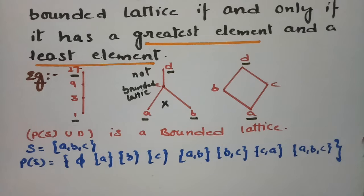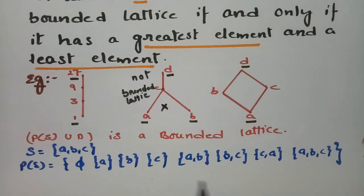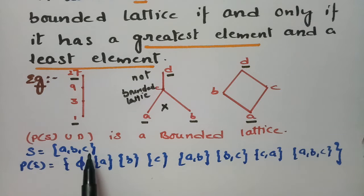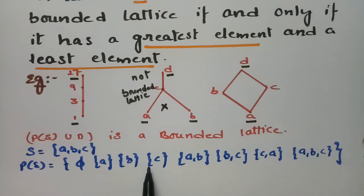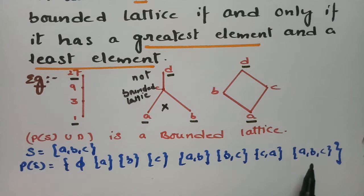The power set P(S) is a bounded lattice. Consider S = {A, B, C}. The power set consists of: the empty set, {A}, {B}, {C}, {A,B}, {B,C}, {C,A}, and {A,B,C}.